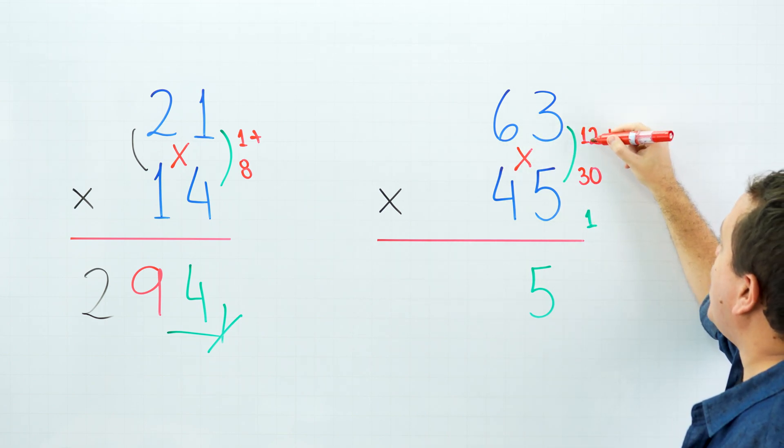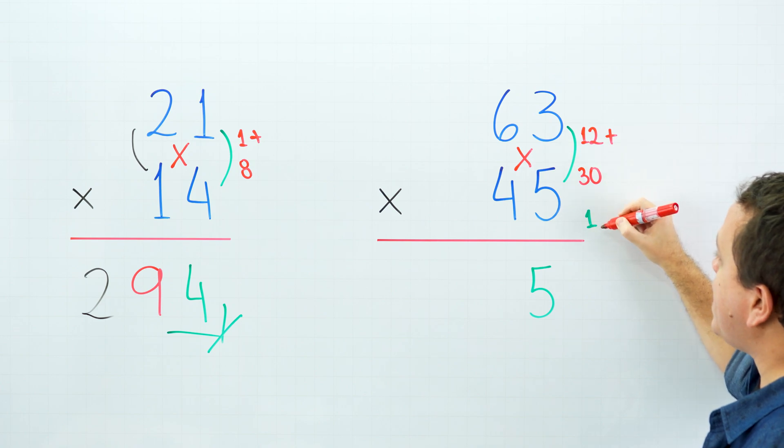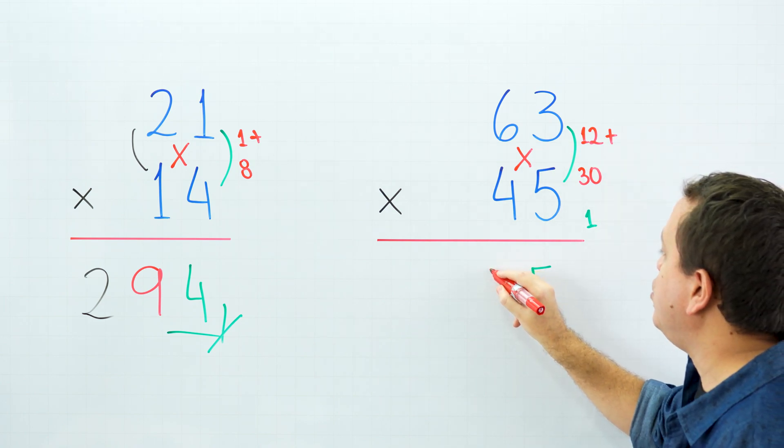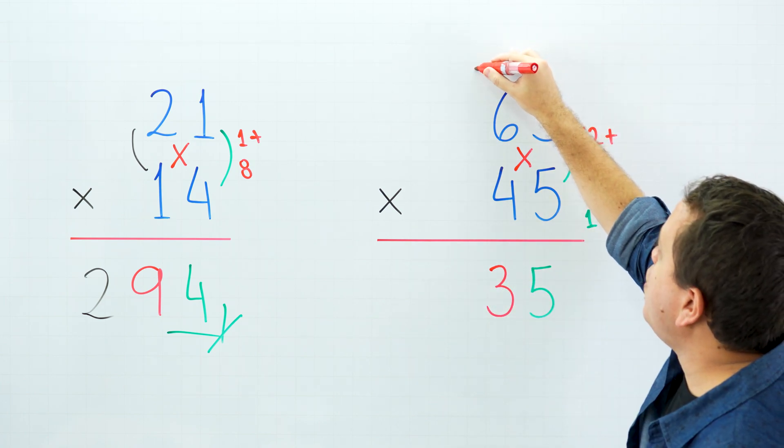Finally, 12 plus 7 is 42, plus 1 is 43. I'm going to write 3 and carry 4 to the next column.